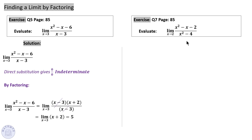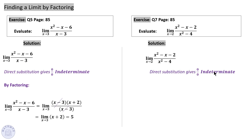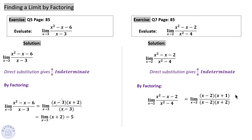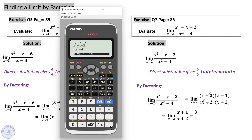For the next question, direct substitution gives the indeterminate form. By factoring, the numerator becomes (x − 2)(x + 1) and the denominator is a difference of two squares: (x − 2)(x + 2). Cancel the common factor, leaving (x + 1) over (x + 2). Substituting 2 gives 3 over 4. By numerical approximation, approaching 2 gives 0.75, which equals 3 over 4.